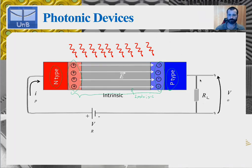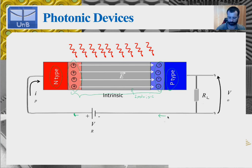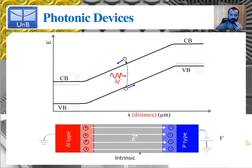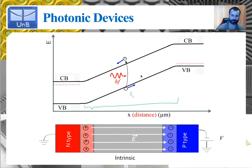A resistor is placed in the circuit so that you can convert the reverse photocurrent into a voltage — through Ohm's law, the photocurrent generates a voltage drop across the resistor. Looking at the band diagram of the PIN diode, we see that the region in which the bands bend is now much greater. The carriers generated in the process of absorption — the electron in the conduction band and the hole in the valence band — will still move downhill, but now you have a much larger active region.